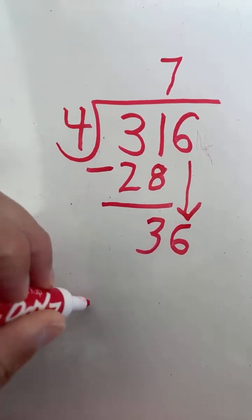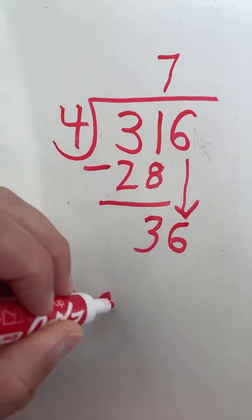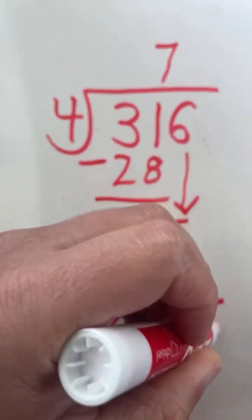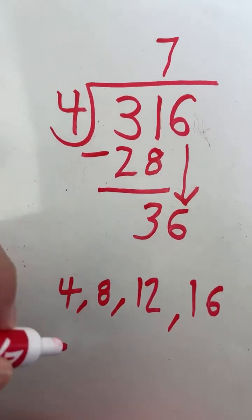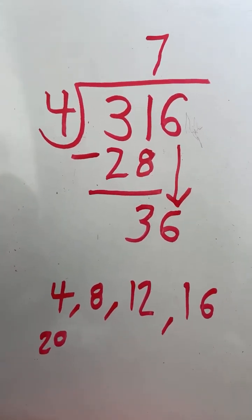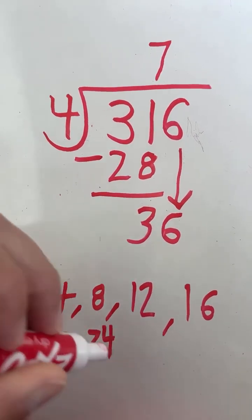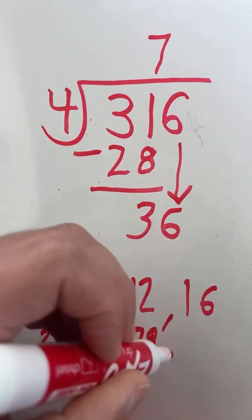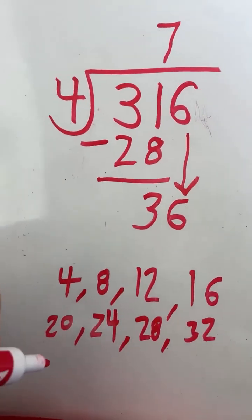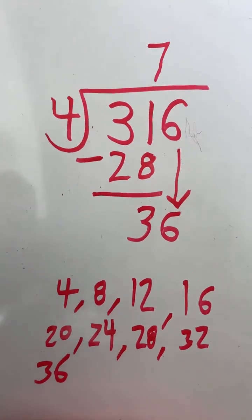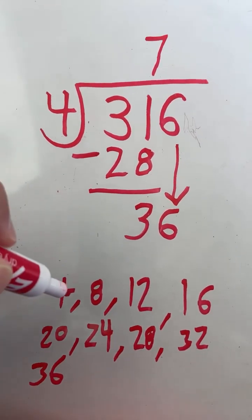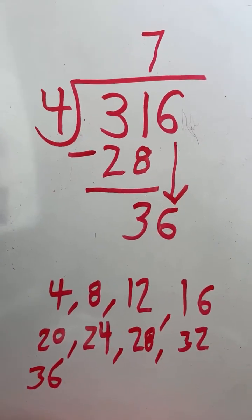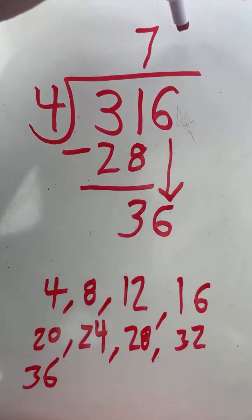Again, we're going to skip count by 4: 4 (1 group), 8 (2 groups), 12 (3 groups), 16 (4 groups), 20 (5 groups), 24 (6 groups), 28 (7 groups), 32 (8 groups), 36 (9 groups of 4). So I ended up counting by 4 nine times. There are 9 groups of 4 within 36. 36 divided by 4 equals 9.